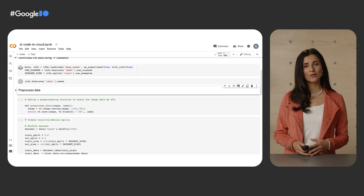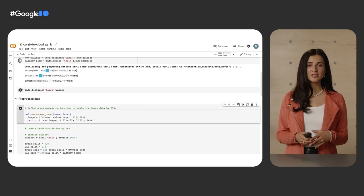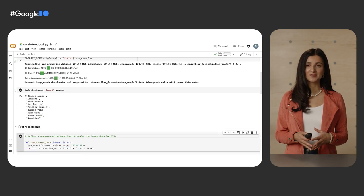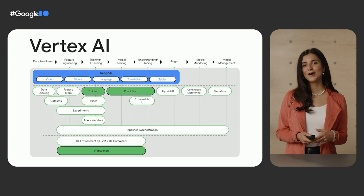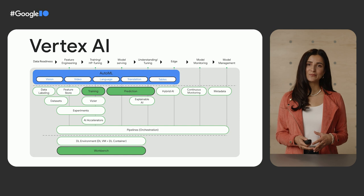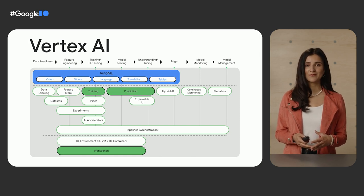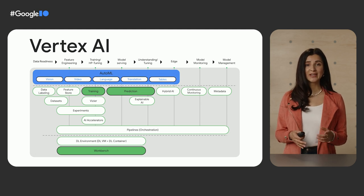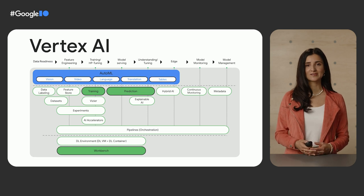We're going to take some code in a Colab notebook and then make it production-ready by training and deploying a model on Google Cloud. If you're new to Colab, it's a hosted Jupyter notebook service that requires no setup to use, works entirely in the browser, and provides free access to computing resources, including GPUs. To train and deploy our model, we'll be using Vertex AI, which is Google Cloud's managed machine learning platform. Today we'll be focusing on training, predictions, and Workbench, which is the hosted notebook service.